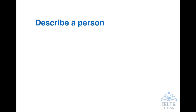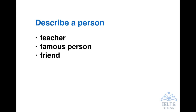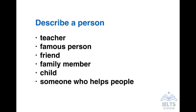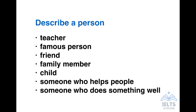Now we come to the main part of this lesson, which is to look at the topic area: describe a person. This is one of our six main topic areas. I've seen this question asked in different ways — if you look at the official Cambridge IELTS books or other official IELTS materials, you'll see variations such as: describe a teacher, a famous person, a friend, a family member, a child, someone who helps people, or someone who does something well. But all of those different tasks are really asking you to describe a person, and I think we can prepare ideas that could be used in any of those specific tasks.